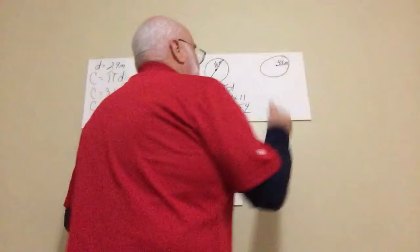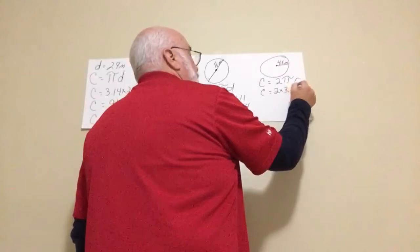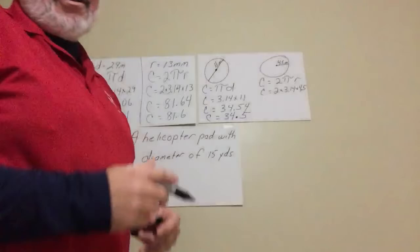Here they're just giving us a picture with the radius. So we're going to do the same thing we did before. Circumference equals 2 times pi times radius. Circumference equals 2 times 3.14 times 4.5.